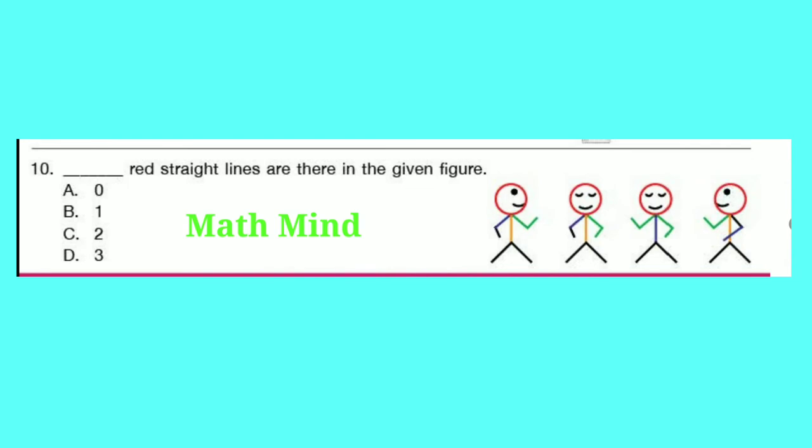Question number 10: How many red straight lines are there in the given figure? The correct option is A — 0. Circles are red in color, but circles are not made up of straight lines.